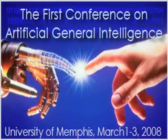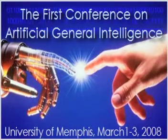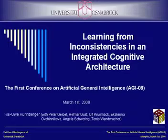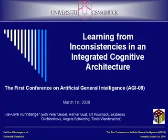This paper is about two things essentially. One is learning from inconsistencies, and the second one is related to cognitive architectures. This session is about cognitive architectures, so perhaps I should stress this a bit, but I need to combine both things — we also have a session about learning.